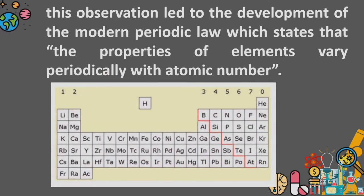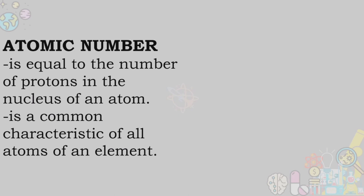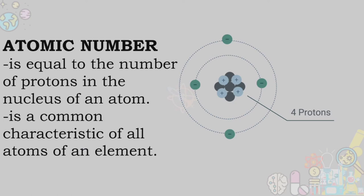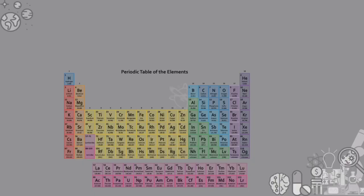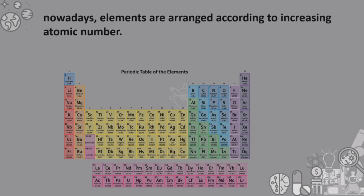The modern periodic law states that the properties of elements vary periodically with atomic number. Atomic number is equal to the number of protons in the nucleus of an atom. Atomic number is a common characteristic of all atoms of an element.